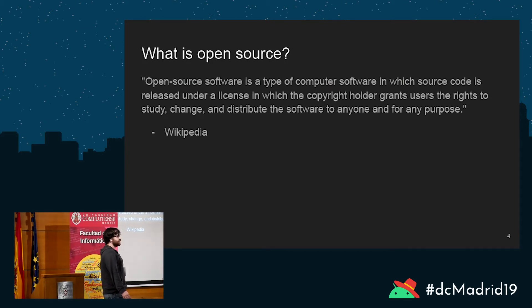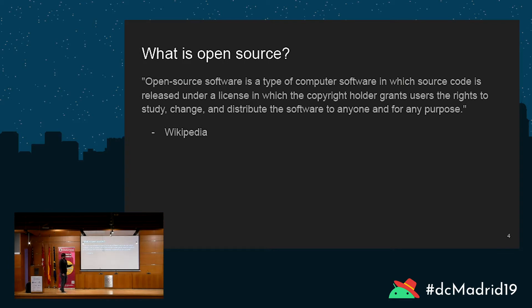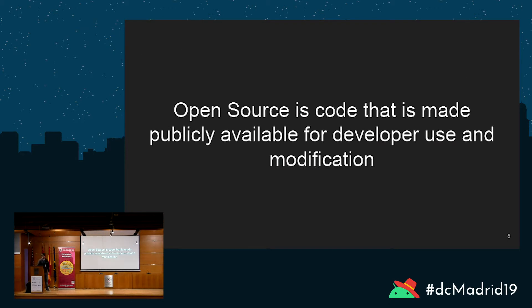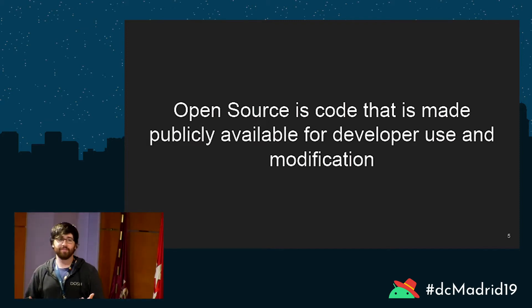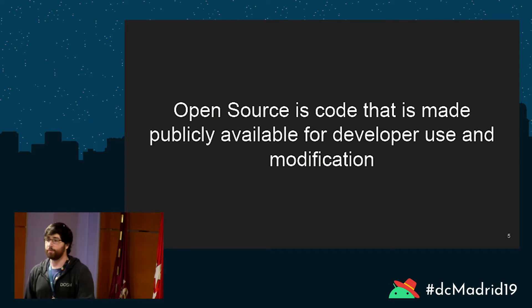A lot of times the worst place to understand what something is, is by Googling the definition. Wikipedia defines open source as: software in which source code is released under a license in which a copyright holder grants users the right to study, change, and distribute the software to anyone and for any purpose. The way I like to explain it: it's code that's made publicly available for our use and modification. You have a say in what goes into it, and you can do it outside your regular day-to-day.